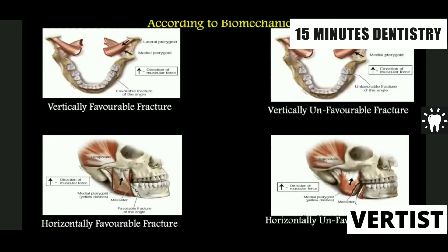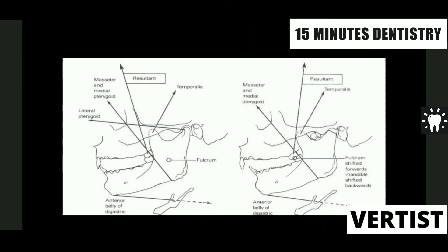The third classification is according to biomechanics. We call them vertically favorable or unfavorable fractures. This is according to the muscle pull. When you look from the top and it gets displaced inwards, that is called an unfavorable fracture. Similarly, according to the pull of the masseter muscle, you've got a horizontally favorable fracture because it goes opposite to the line of the muscle fibers, and a horizontally unfavorable fracture if it goes along the fibers of the masseter muscle. Regarding impaction — the condyle gets fractured and the ramus of the mandible gets shortened; accordingly, the fulcrum gets shifted to the molars.